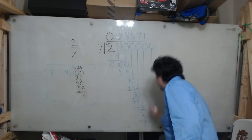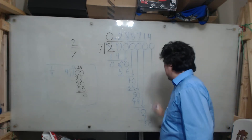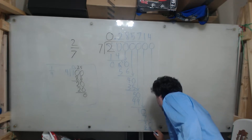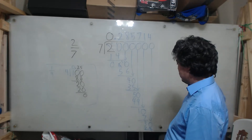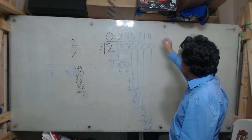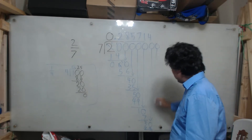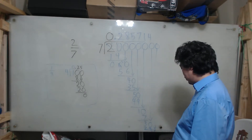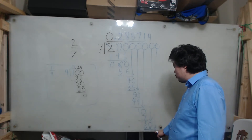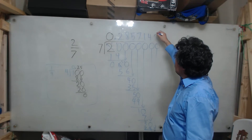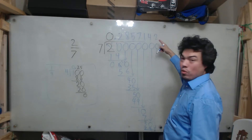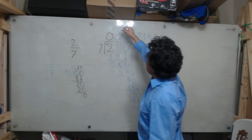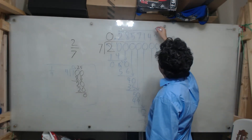7 goes into 30 four times — that's 28. We subtract and get a 2. I attach a 0, bring it down, and 7 goes into 20 twice, because 2 times 7 is 14. Here is where the repetition is going to happen — 7 goes into 20 twice, that will give 14. And you can see that once I do the multiplication I'm going to be back at the same point, so this is actually the part that repeats.